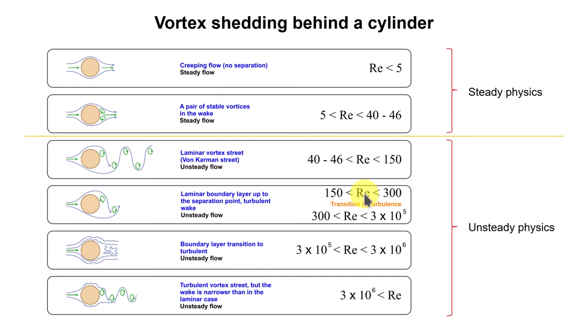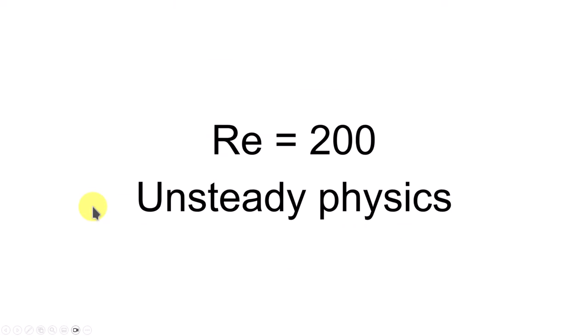Some people ask, 'Did your solution converge?' And it's a very relative question. It depends on how you measure convergence, because if you are running an unsteady case with a steady solver, it will never converge — you'll have all these oscillations. If you're running a steady case, it will converge, but this is the exception rather than the rule in industrial cases. So in this case, you need to learn how to differentiate between unsteady and steady physics.